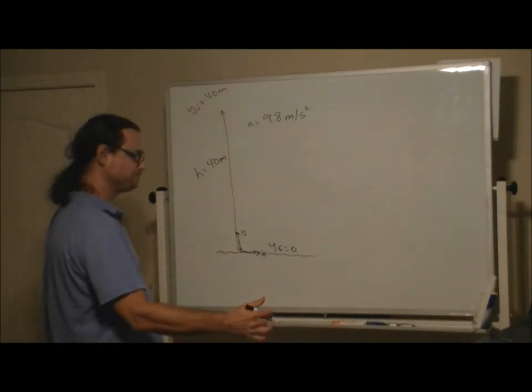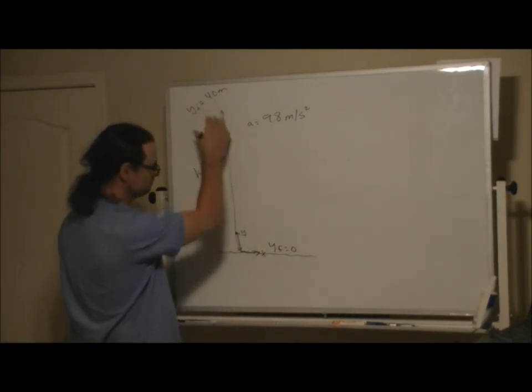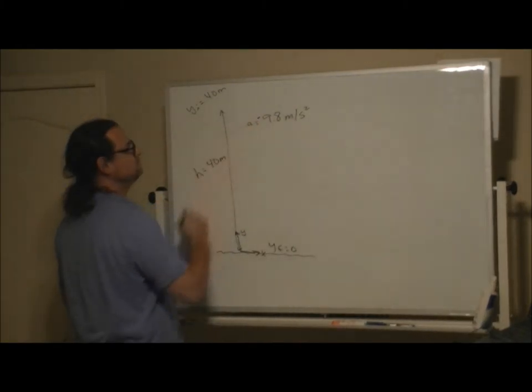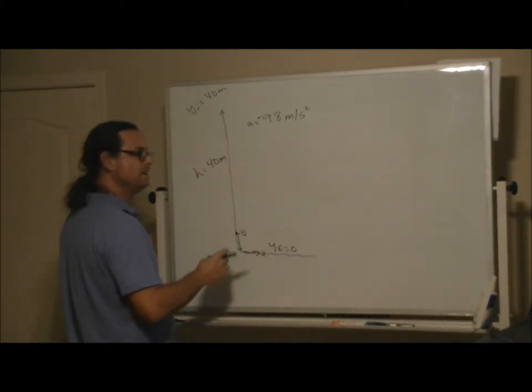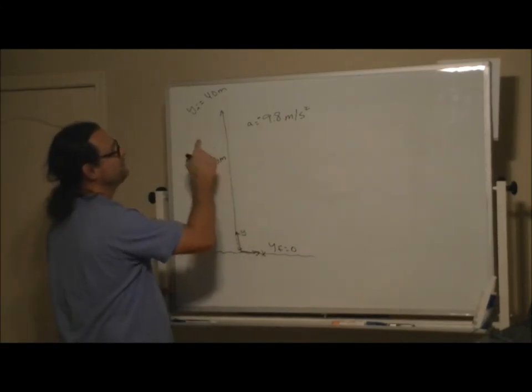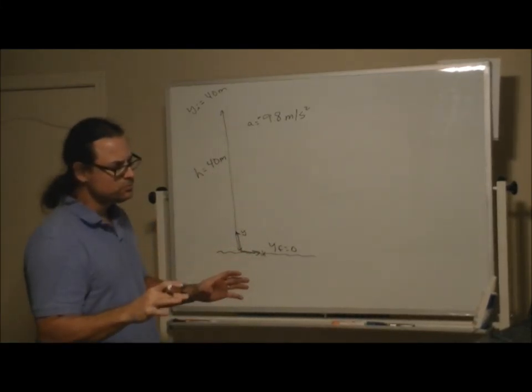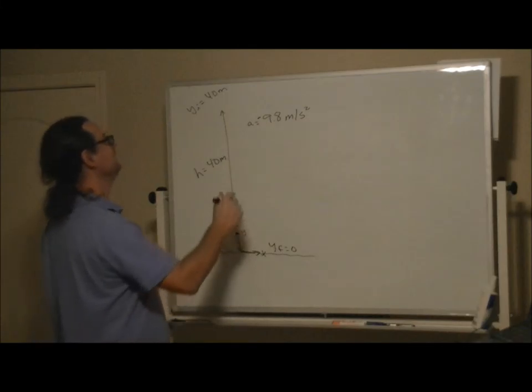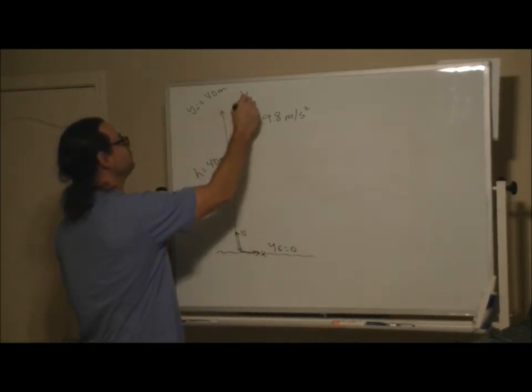And so thinking about what we need to do here, which equation do we need? Well, we know the initial height and the final height, and we have the acceleration, and we want to know the time. Now, the problem didn't really give us the initial velocity, but let's assume that the initial velocity is zero meters per second,